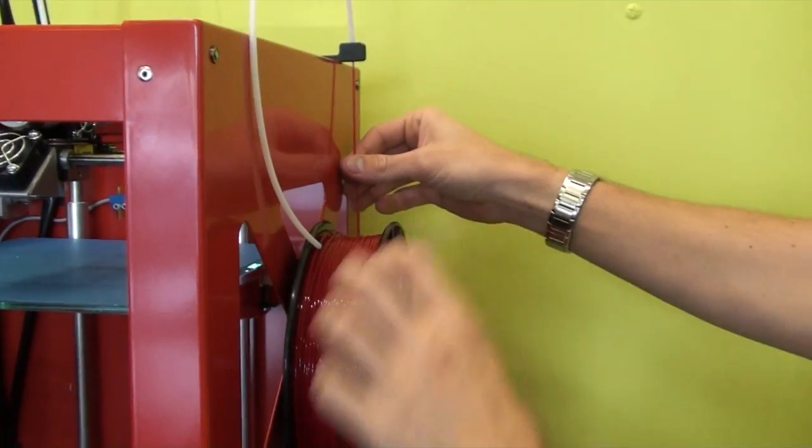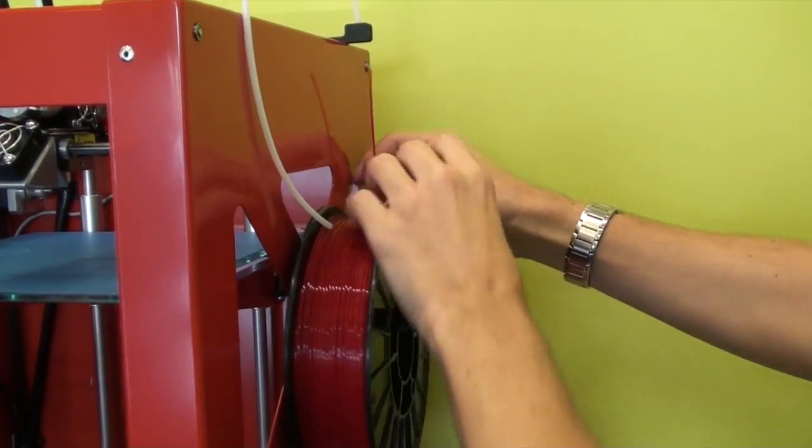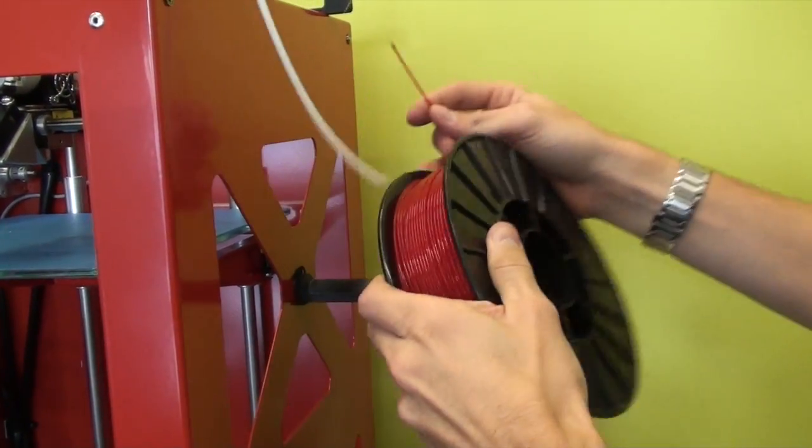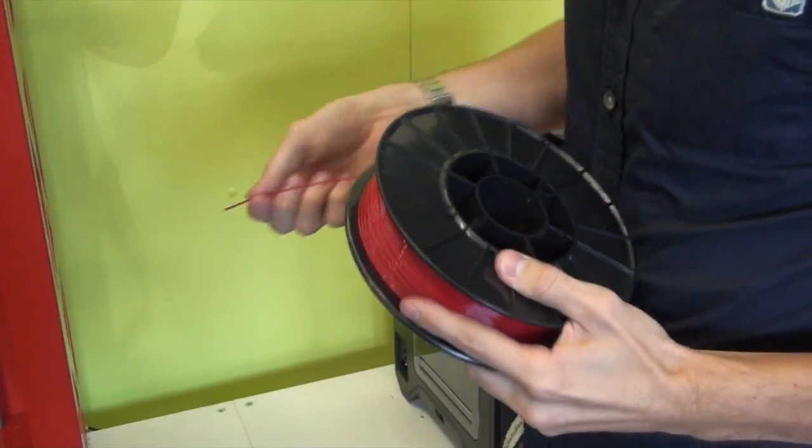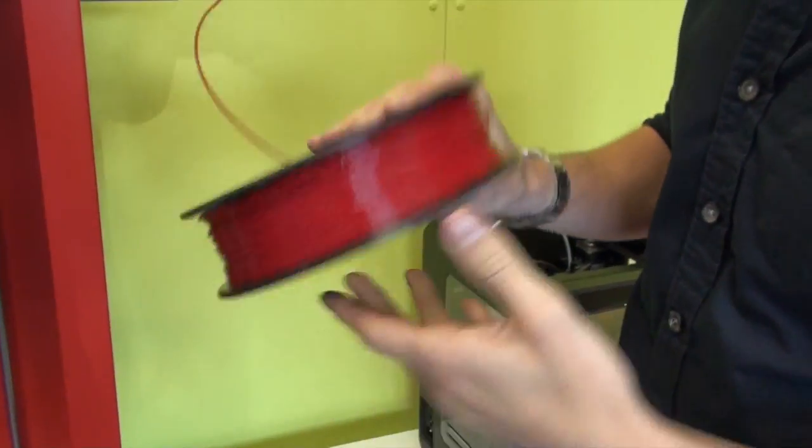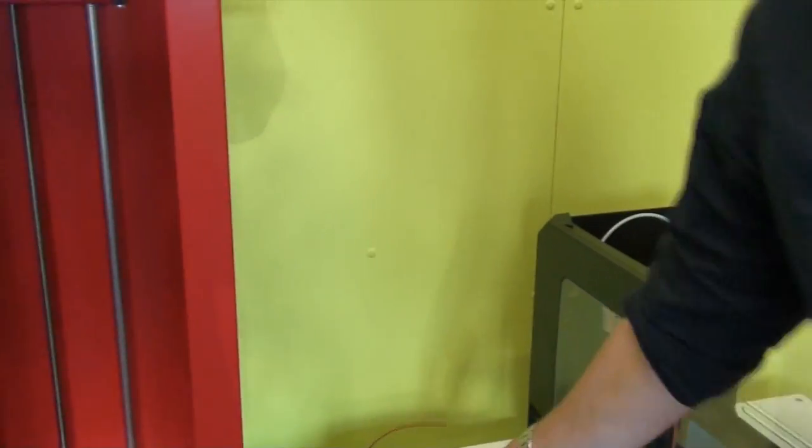Now, be careful to slot the loose filament through one of the holes if possible. There we go, it just stops it getting tangled up. I'm going to grab a new filament.